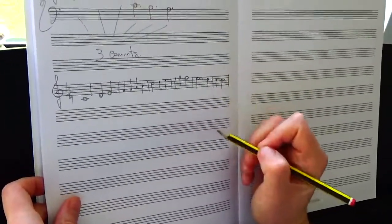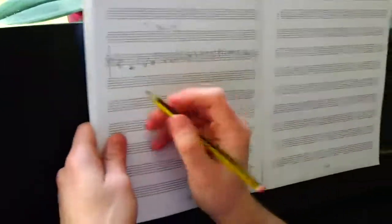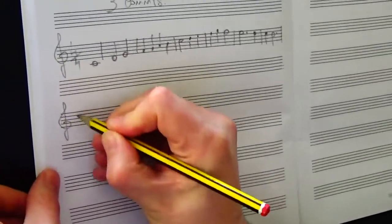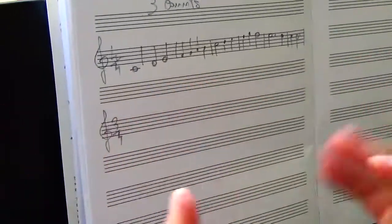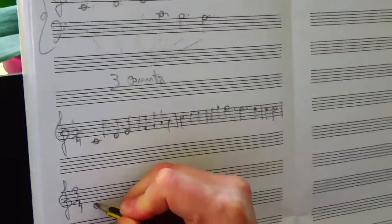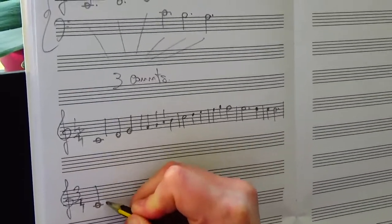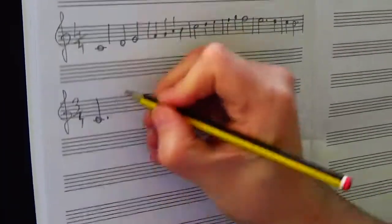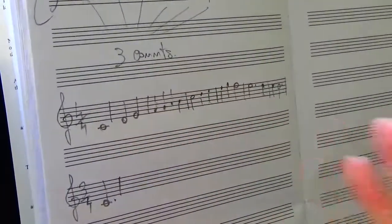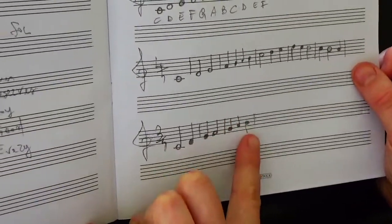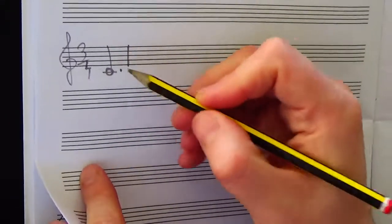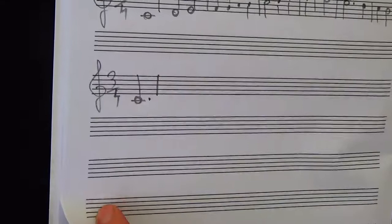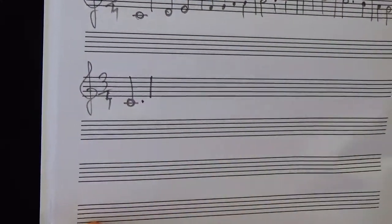When I move to a 3/4 time signature, I can finally use one note that completes just one bar on its own. The dotted minim, since it's three counts by itself, can fill in the whole bar. On top of the rhythms we discovered before, we can simply add this option: completing the bar using just one sound worth three counts.